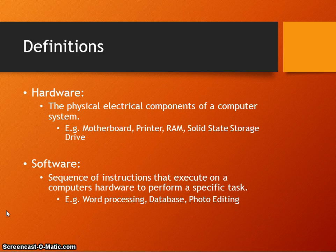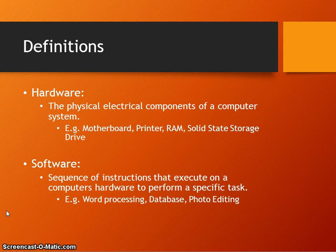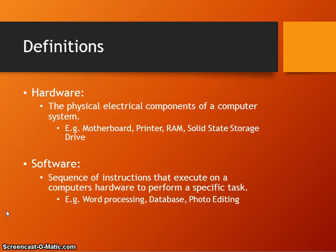It is the hardware that software runs upon. Software, on the other hand, is the sequence of instructions that execute on the computer's hardware. Software is designed to perform a specific task. Examples of software include database software, spreadsheet software, presentation software, sound editing software, and photo editing.